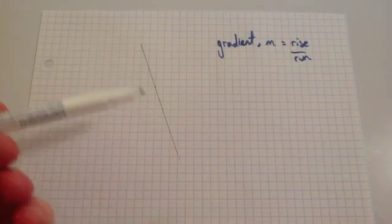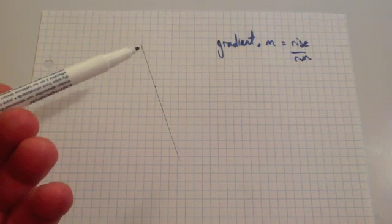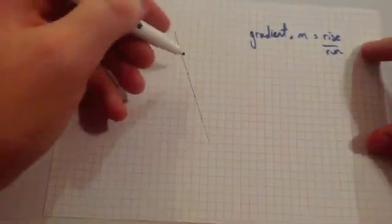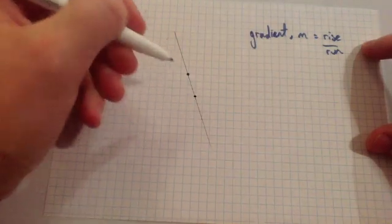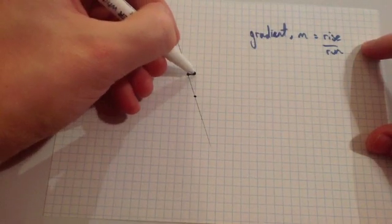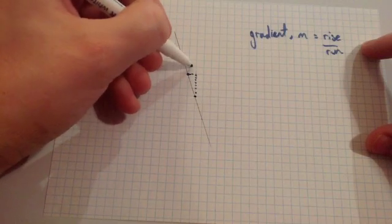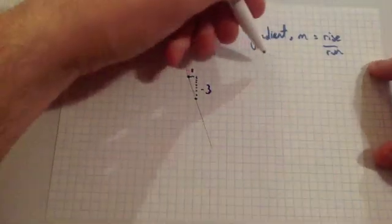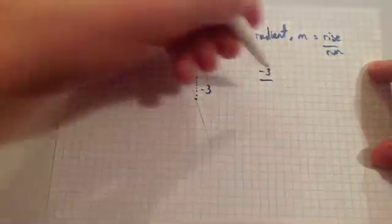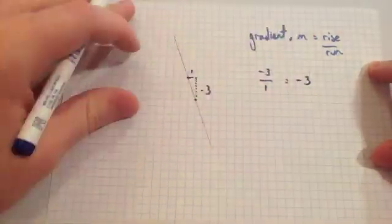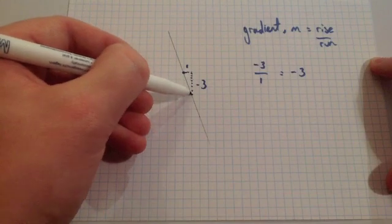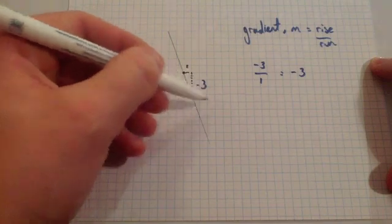This time, we're going to calculate the gradient of a line that goes down. If a line goes down, it's going to have a negative gradient — going across and then down gives a negative gradient, whereas a line going up has a positive gradient. Choose two coordinates, make your little triangle: go across 1 and down 3. The run is 1 and the rise is minus 3. So the gradient is minus 3 divided by 1, which is minus 3.